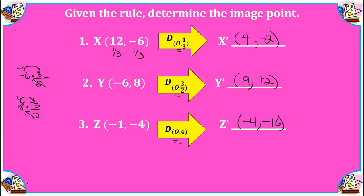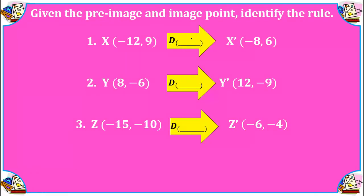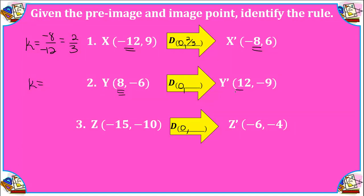This time we are looking for the rule. Without a graph, the center of dilation is assumed to be the origin. To find the scale factor, take the new coordinate such as −8 and compare it to the pre-image coordinate. Simplifying new over old gives two-thirds as the scale factor. In the second example, using new coordinate 12 compared to original 8, dividing both by 4 gives three-halves as the scale factor.